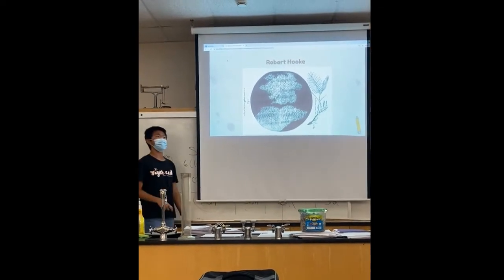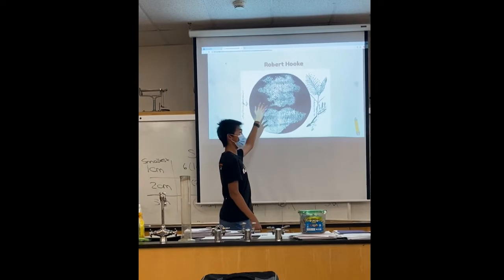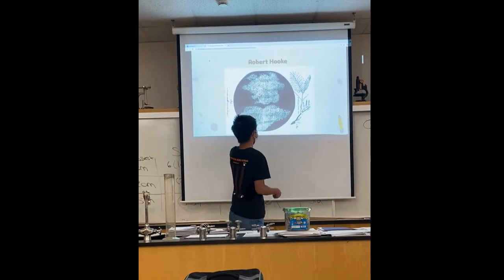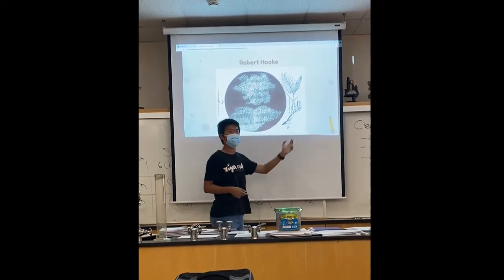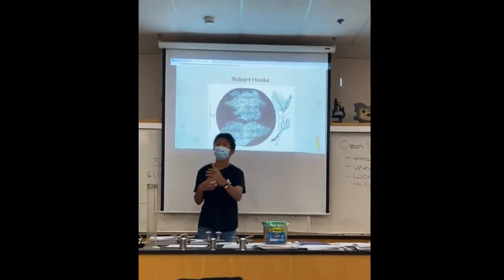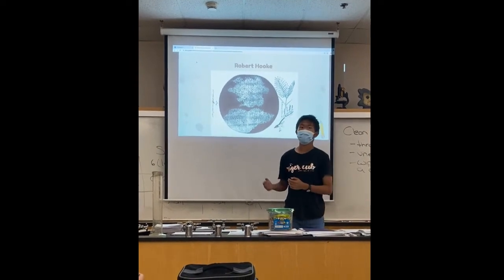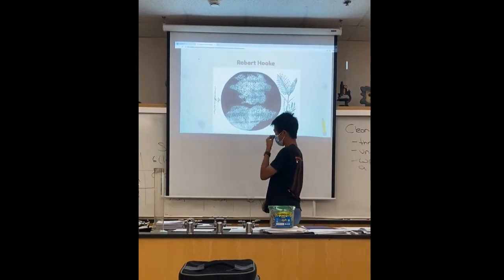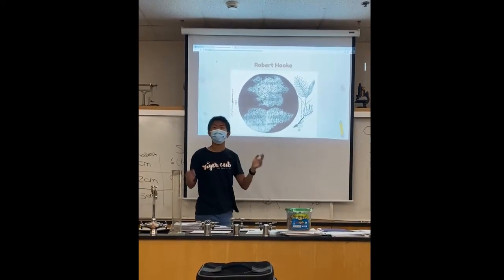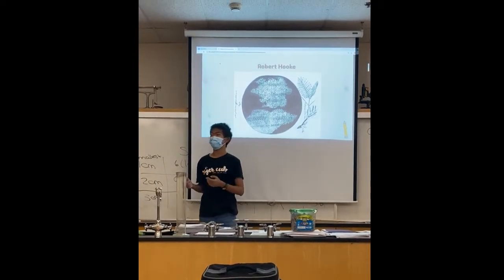This is what Robert Hooke saw under his microscope. These specimens of cork, which are dead plant materials, show little compartments. He drew a connection between these compartments and monastery cells — the rooms in which monks lived during his day. Because of that connection, he named what he saw "cells," and that's where we get our name for the basic biological unit nowadays.